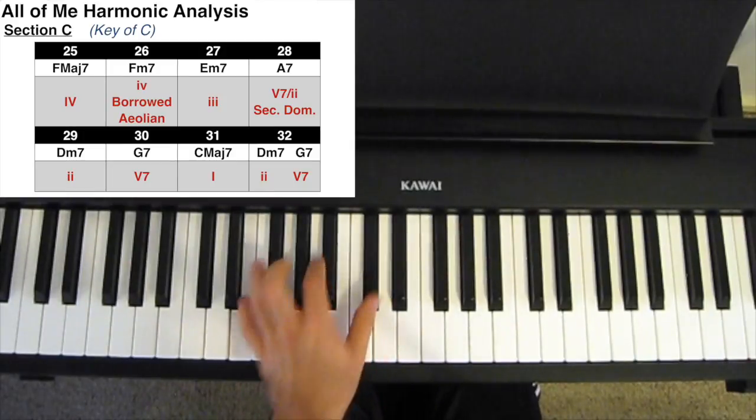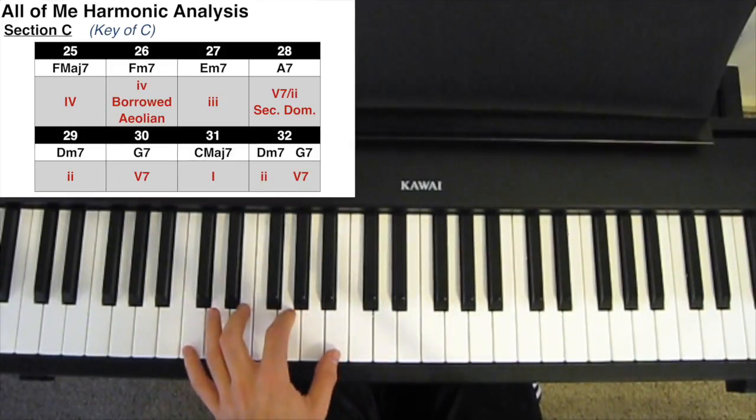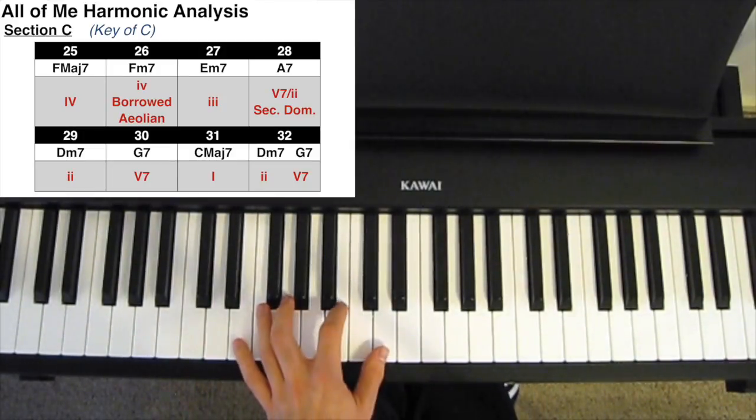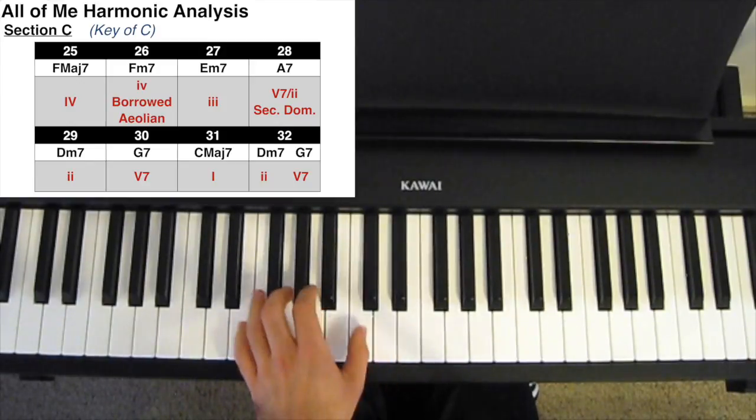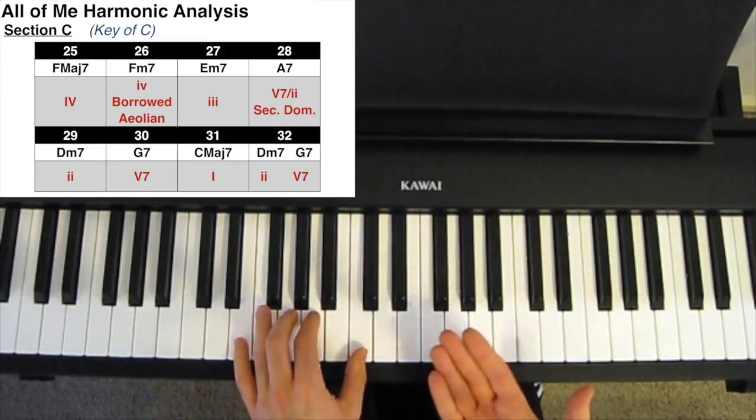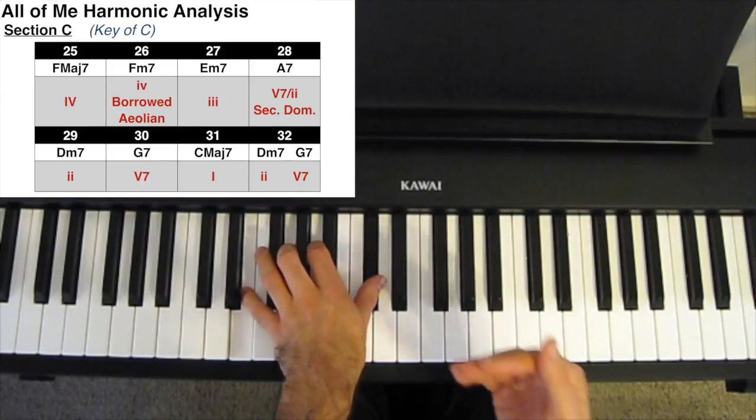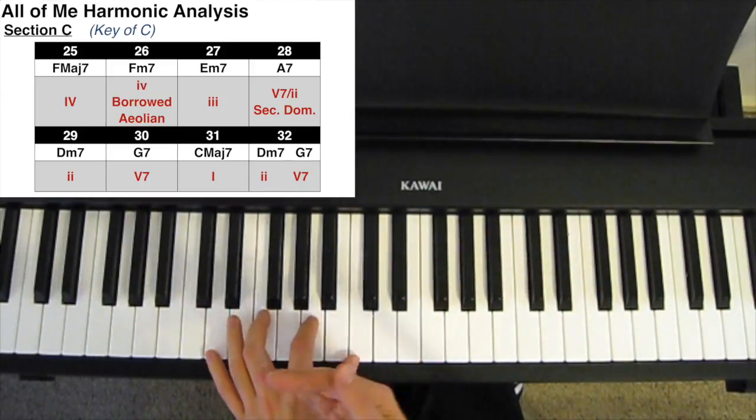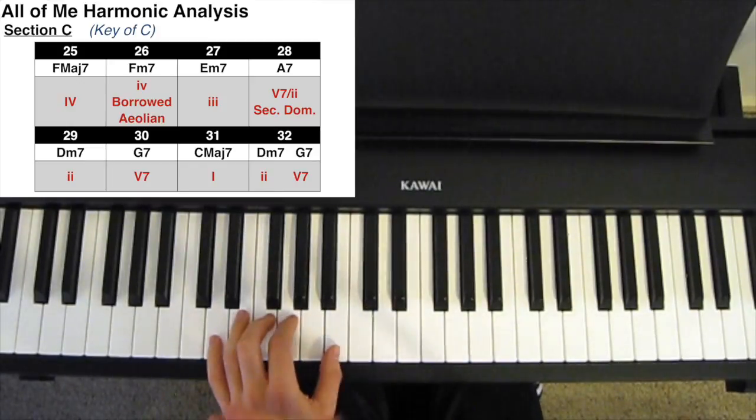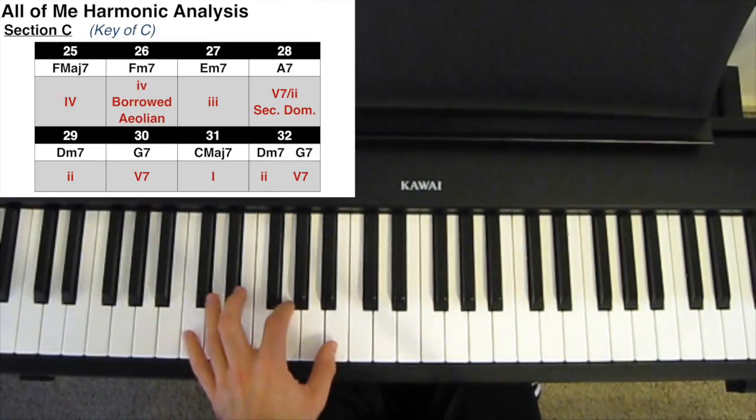We have a 3-6-2-5-1. The 3 is the E minor 7. Then, instead of playing a 6 minor, we play a 6 dominant, which acts as a secondary dominant, tonicizing the 2 chord. And then we go to the regular 5, and back to the 1.